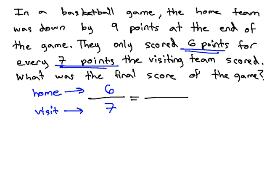The other piece of information we must read carefully. They're down by 9 points. Down by 9 points means they have 9 points less than the visiting team, but we don't know how many points the visiting team has, so let's call that x. The home team, then, being down by 9, we would need to subtract 9 from x or the visiting team score.